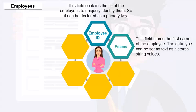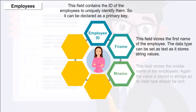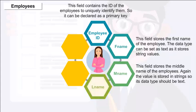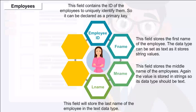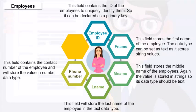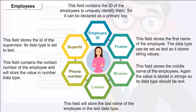F. Name: Stores the first name of the employee; data type is text. M. Name: Stores the middle name; data type is text. L. Name: Stores the last name; data type is text. Phone Number: Contains the contact number of the employee stored as a number data type. Super ID: Stores the ID of the supervisor; data type is text.